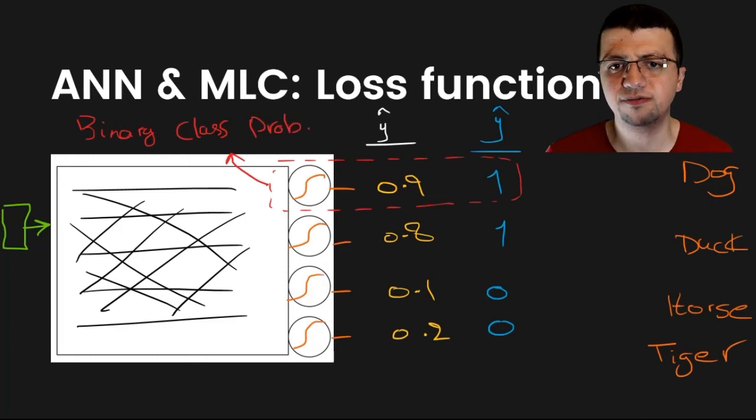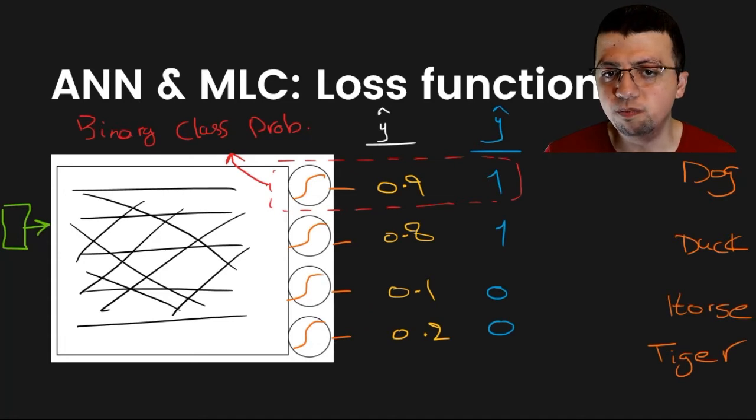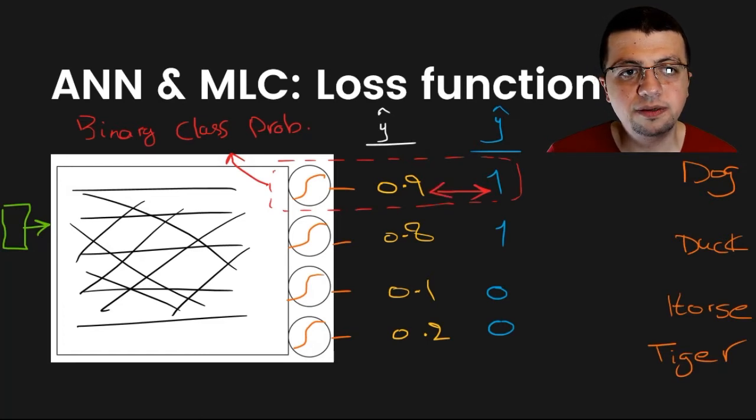So, for a binary classification problem, we know how to measure the difference between your... Actually, I made a mistake here. This guy is not y hat, it's y. My apologies for that. So, that is your ground truth vector.